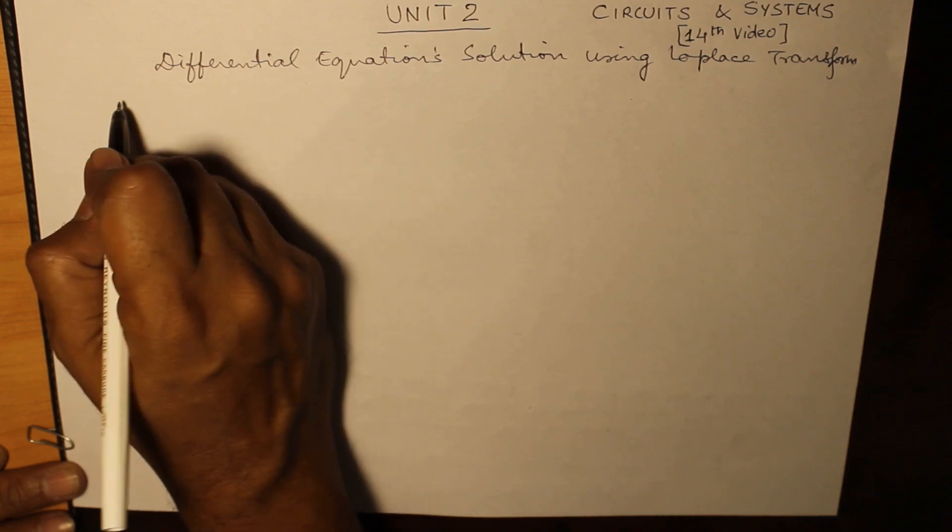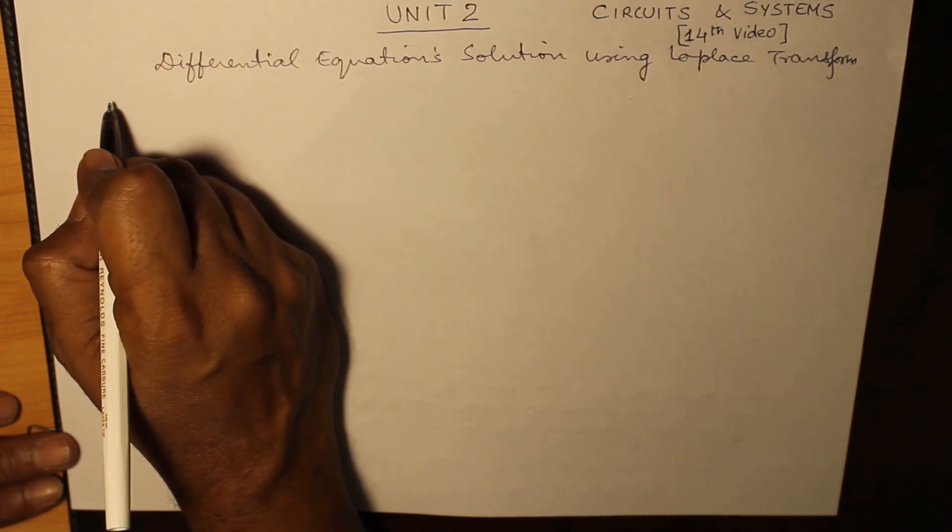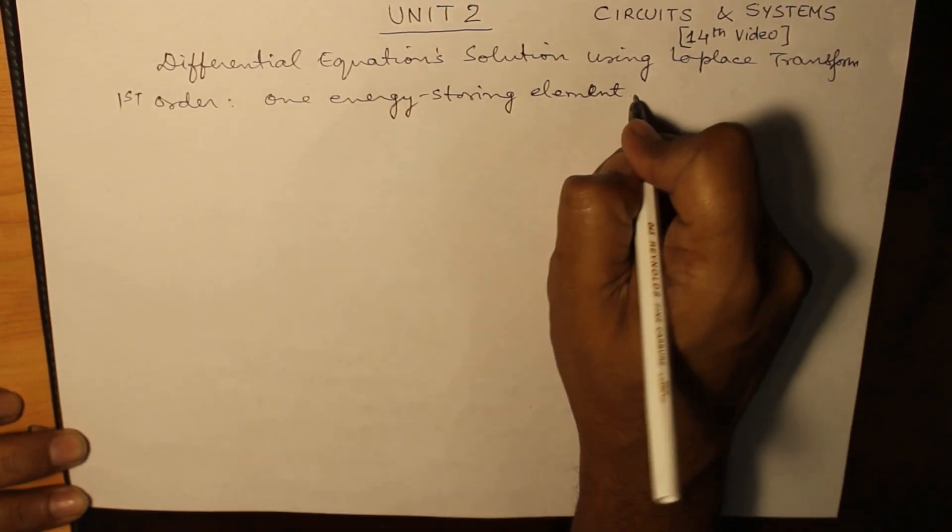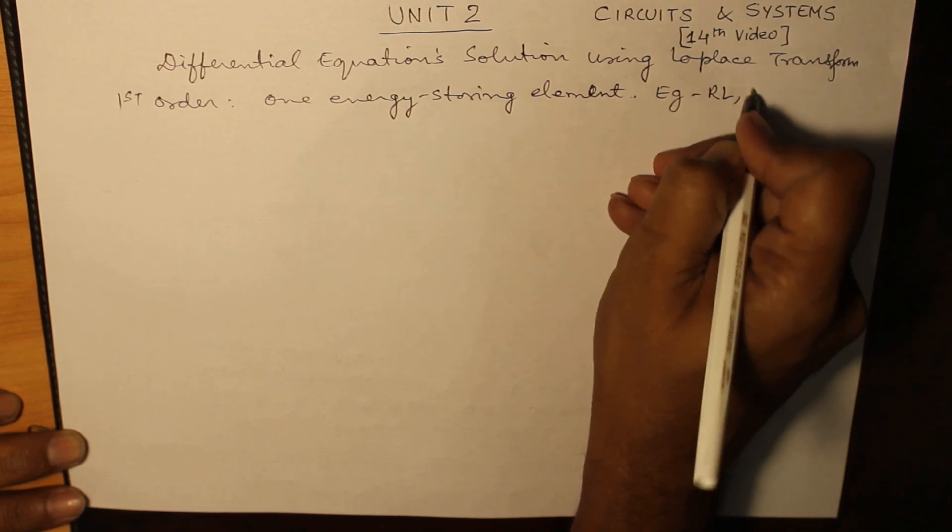First of all, the first order differential equation has one energy storing element. The example of it is either RL circuit or RC circuit.